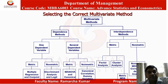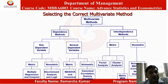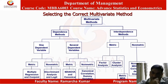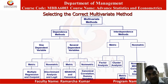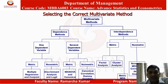Under the multivariate dependence methods, if you have one dependent variable and it is metric, we use multiple regression or conjoint analysis. If it is non-metric, we use discriminant analysis or logit. If there are several dependent variables and they are metric, we use MANOVA or canonical correlation. If the several dependent variables are non-metric, we can use canonical correlation with dummy variables.